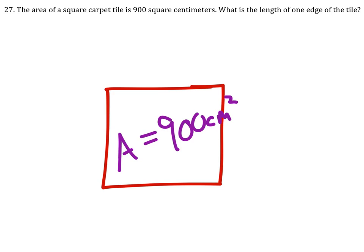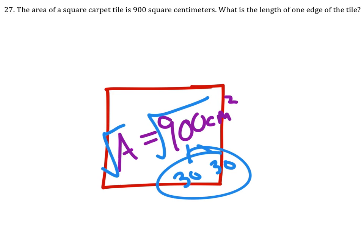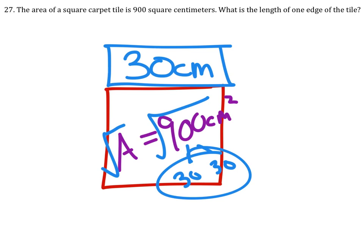So how do we find the side length? We just got the formula for it, guys. So we're going to square root both sides. And if you split this up, you'd get 30 and 30. There's a pair right here. So the side length is 30 centimeters. Done. That is the length of one edge of the tile.